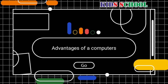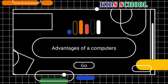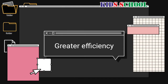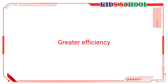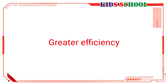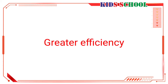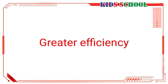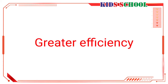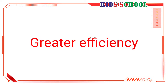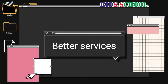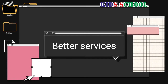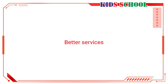Now let's see the advantages of a computer. The first advantage is greater efficiency. Computers help people do their work more efficiently — for example, in offices, computers are used to maintain accounts, keep records, etc. All the work is done accurately in a short time.